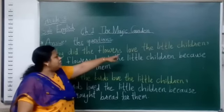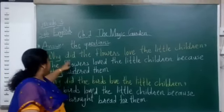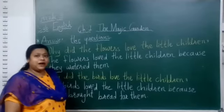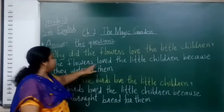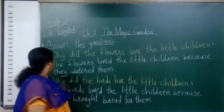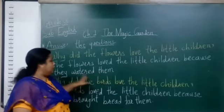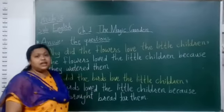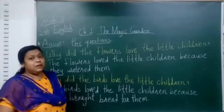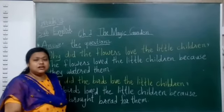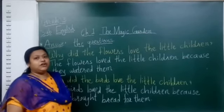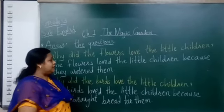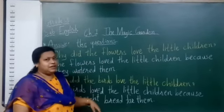Fourth question: Why did the flowers love the little children? Jho flowers thay, woh little children ko kyun pyaar karte thay? The answer is: the flowers loved the little children because they watered them. Woh chote bachye unko daily paani daltay thay.